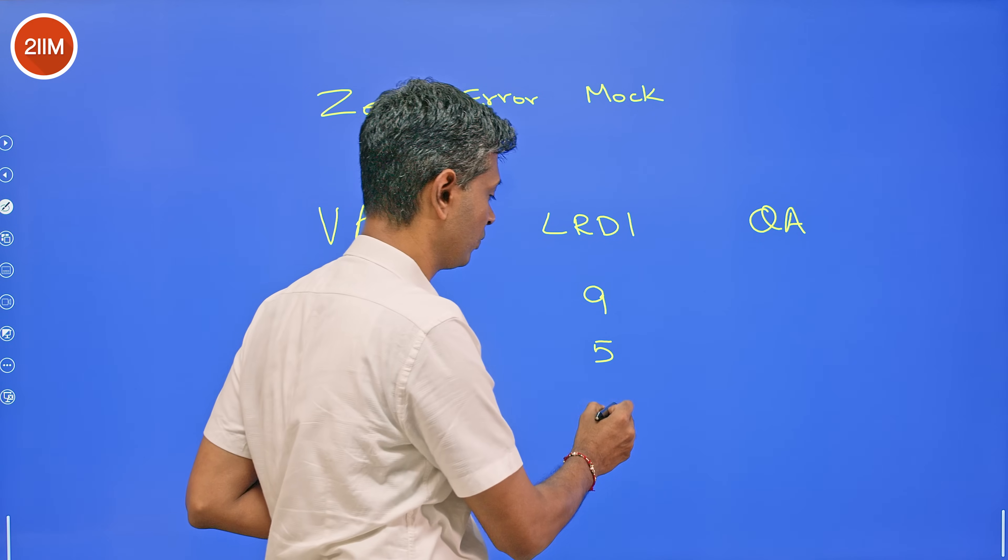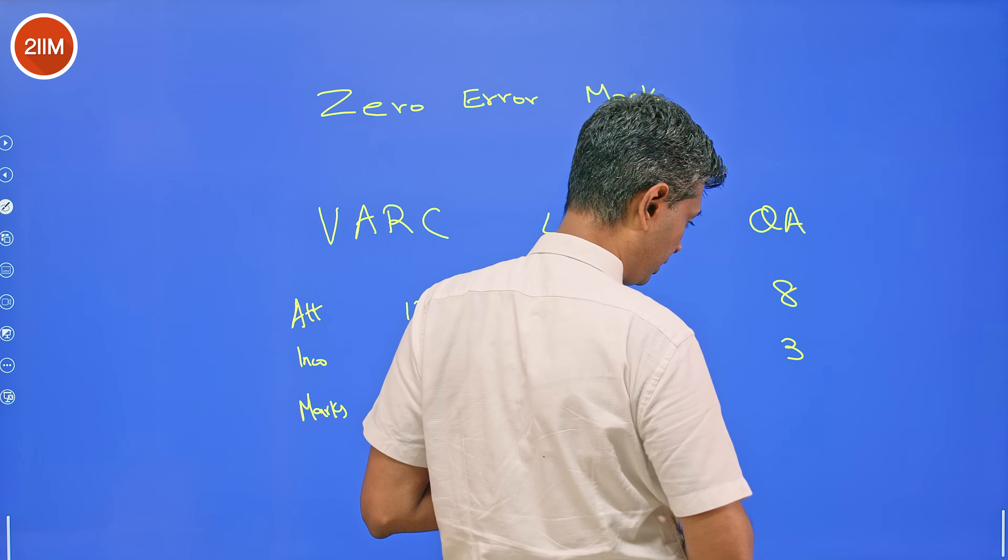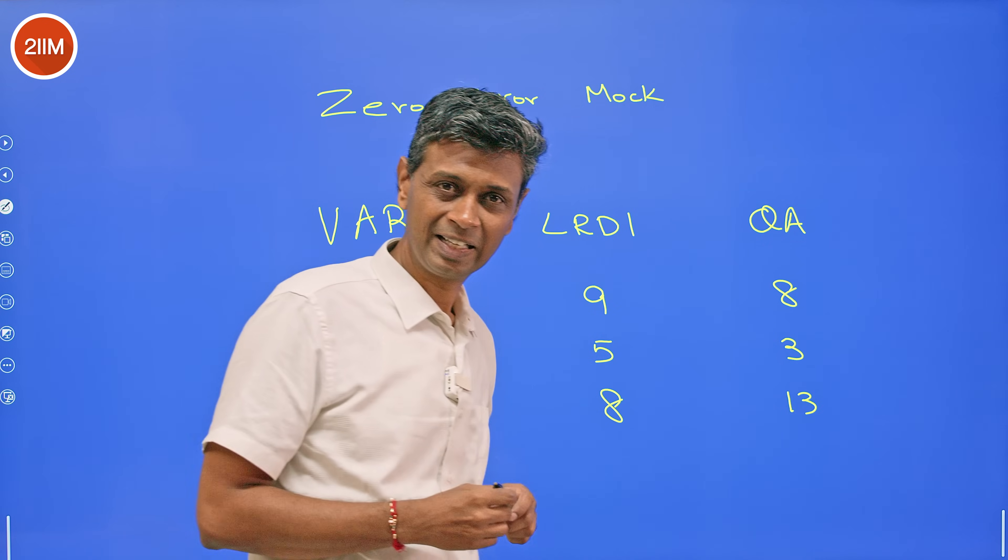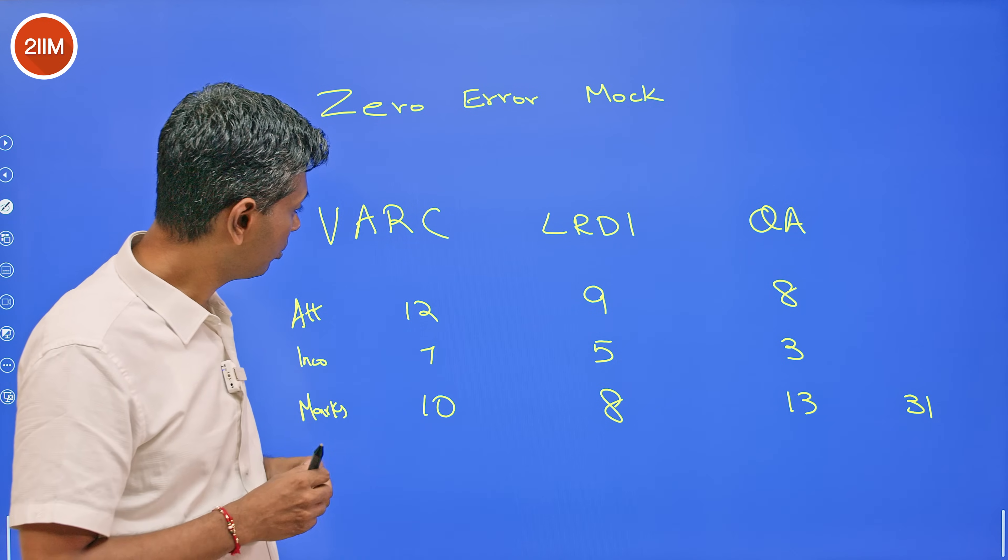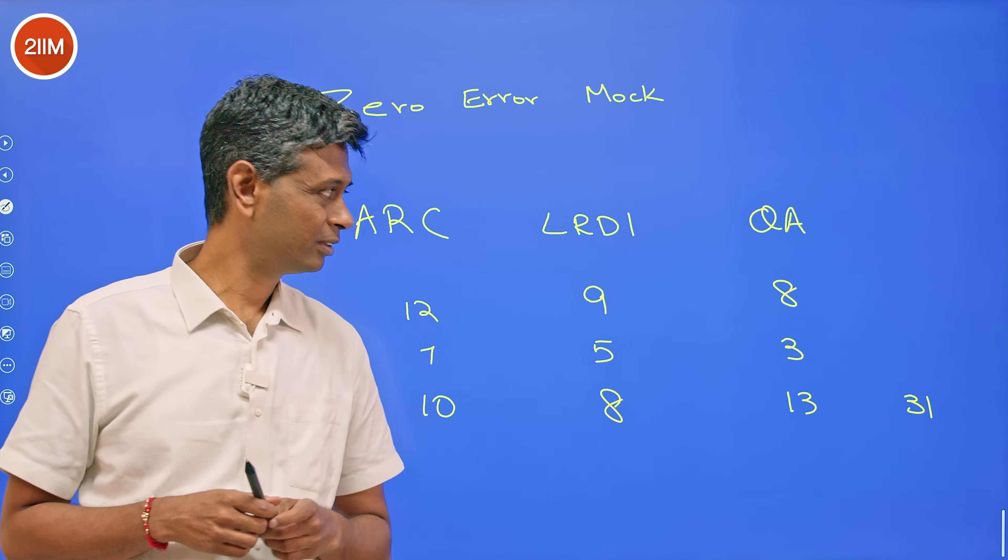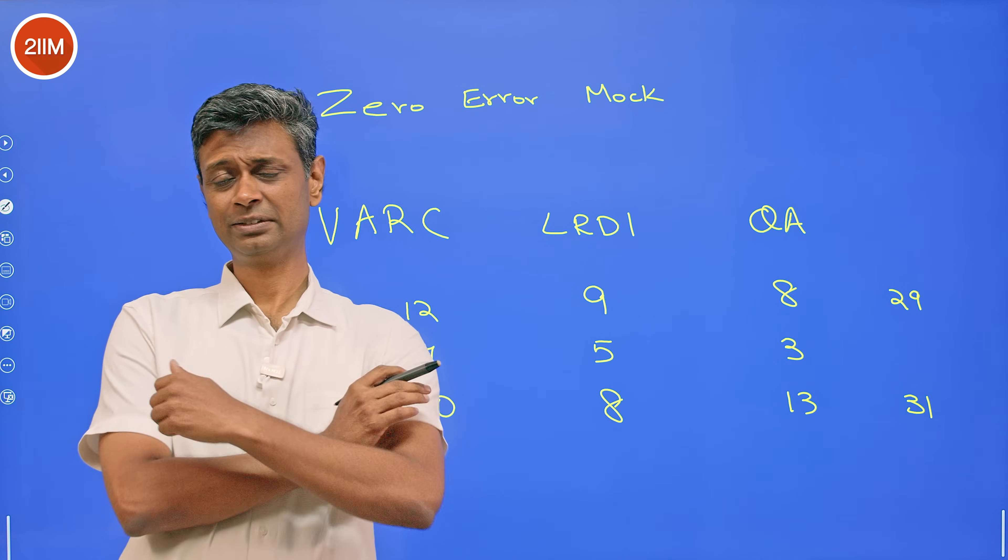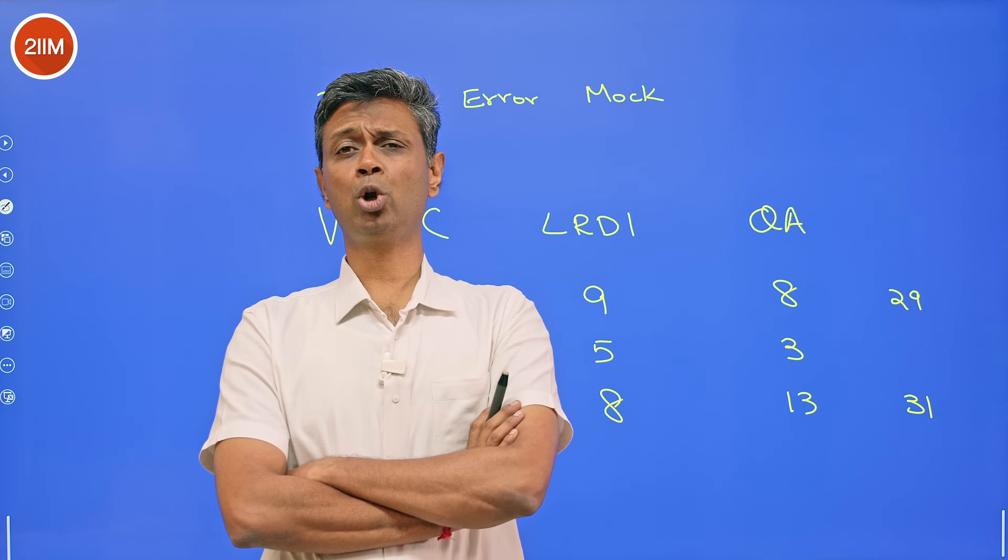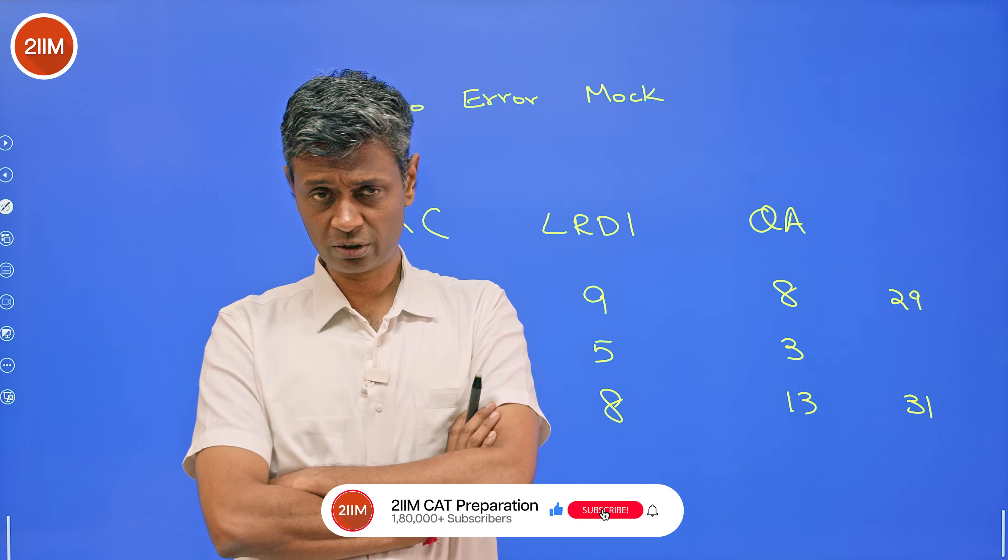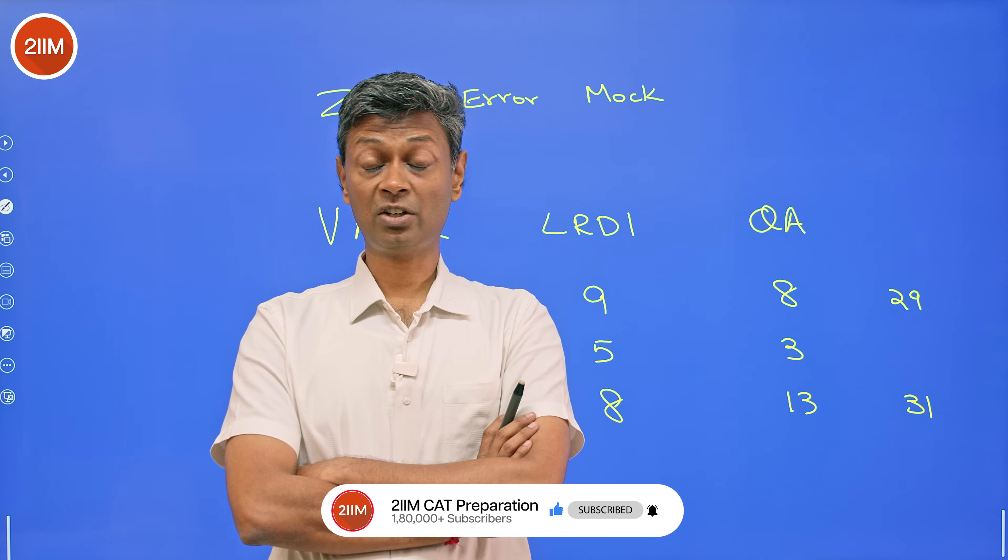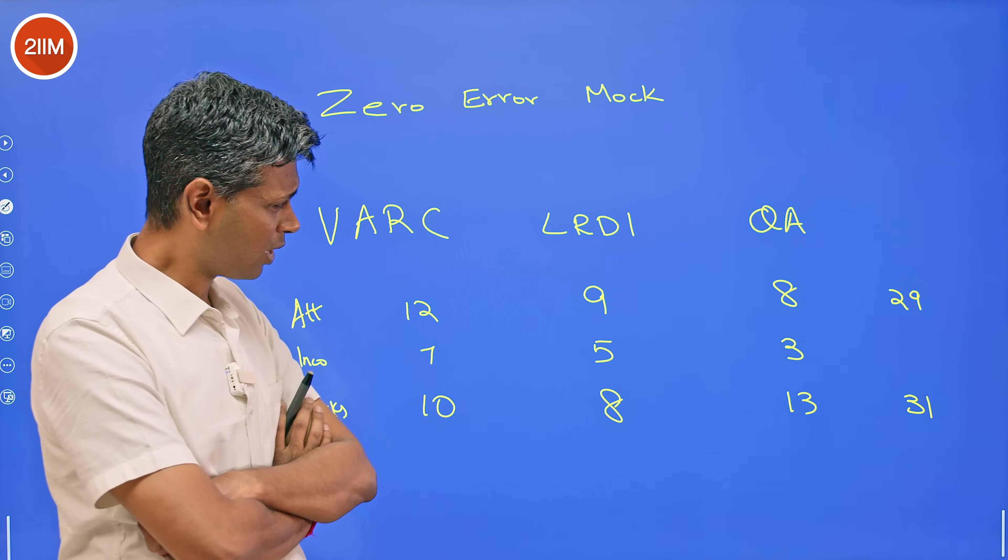4 into 3 is 12 minus 4, 8 marks. Quant was tough, not that easy. I attempted 8 questions, got 3 wrong. 5 into 3 is 15 minus maybe 2, 13 marks. I ended up with 10 plus 8, 18 plus 13, 31 marks totally. I attempted 12 plus 9, 21, plus 8, 29 questions, nearly 30 questions, resulting in 31 marks. This seems like a very plausible scorecard for several people on their journey in this preparation. This could be the final scorecard for several people as well.